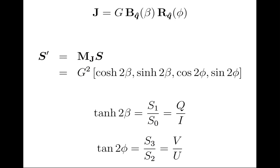If we expand the Jones matrix in two-by-two form, the boost along Q gives a diagonal matrix with e-to-the-beta in the upper left and e-to-the-minus-beta in the lower right. The rotation about Stokes Q by phi gives e-to-the-i-phi in the upper left and e-to-the-minus-i-phi in the lower right. Q-hat corresponds to S1, which is the first Pauli matrix — diagonal with one and minus one in the upper-left and lower-right.